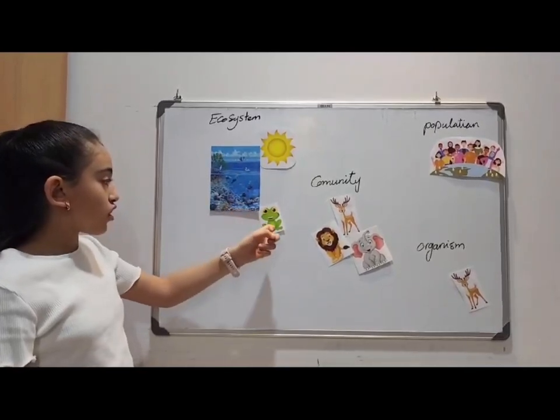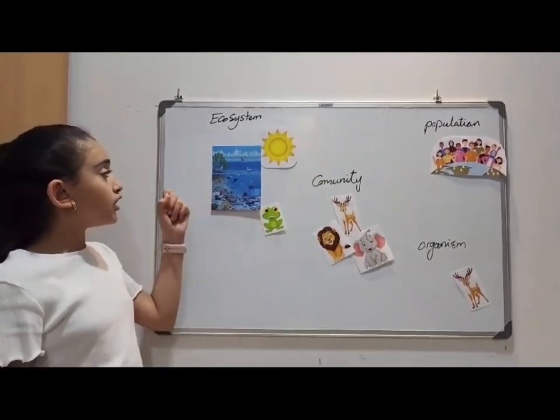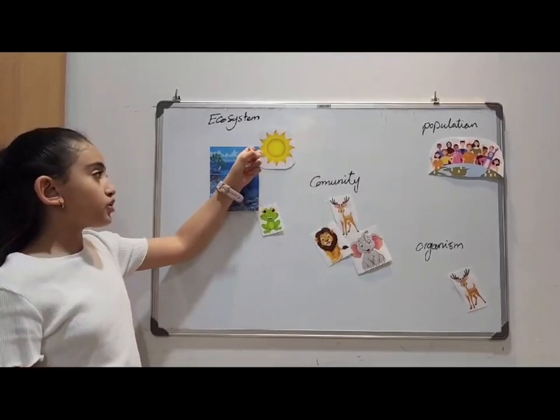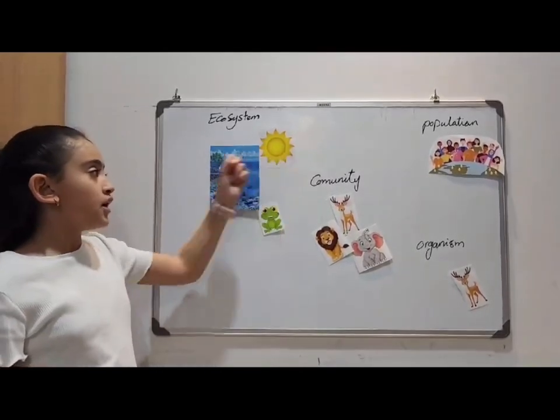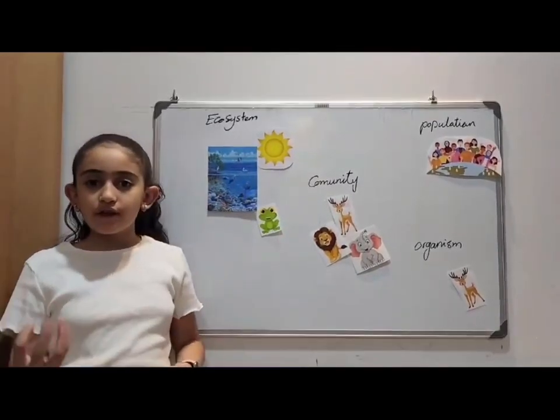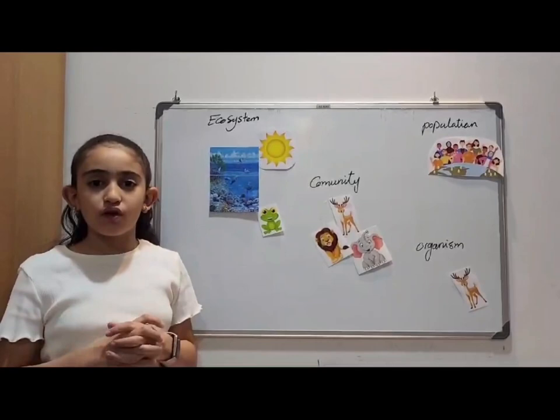More living things include sea stars and frogs. Non-living things include clouds, sky, and sun. Non-living things and living things interact together in one place.